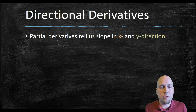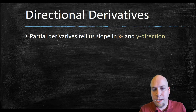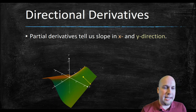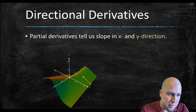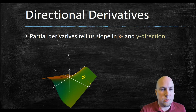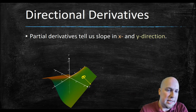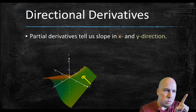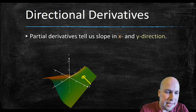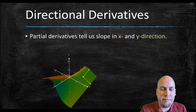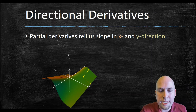Now that we know how to compute the gradient, we can compute directional derivatives — this is the whole point of the gradient. Partial derivatives tell us the slope in the x and y directions. For example, at the point (1, 1), the x partial derivative is slightly negative so you go down a bit walking in the x direction, while the y partial is slightly positive so you walk up a bit in the y direction. But what about all the other directions? There are many ways you could walk along the surface.